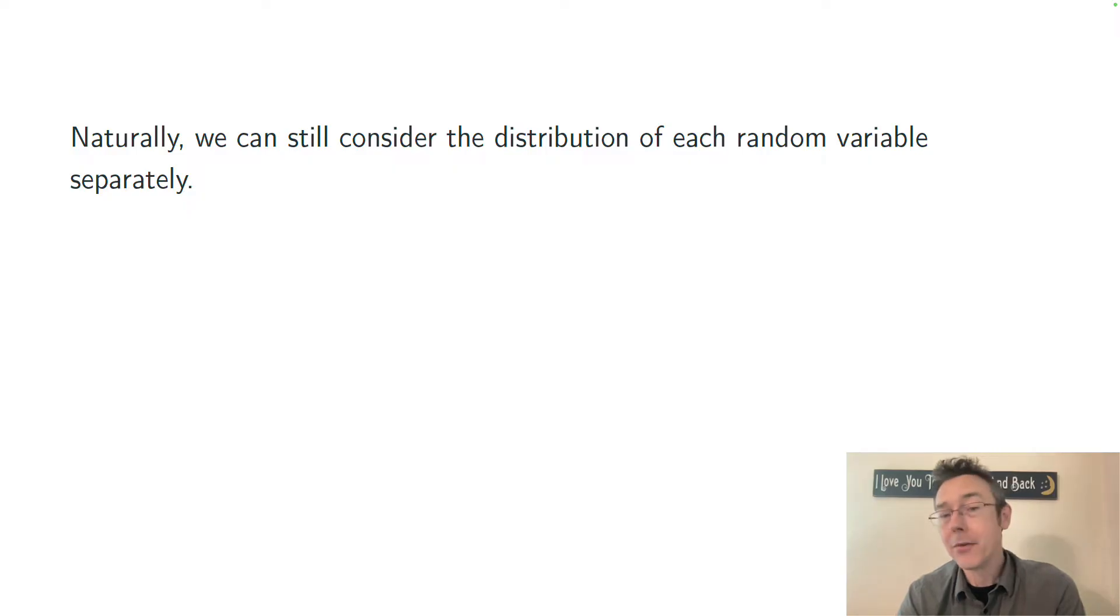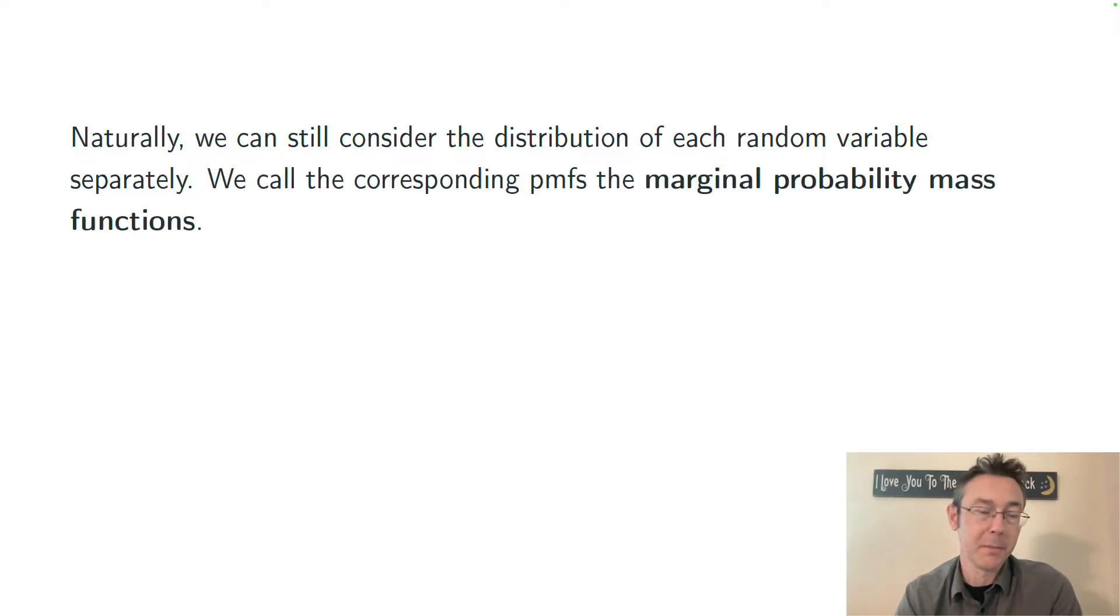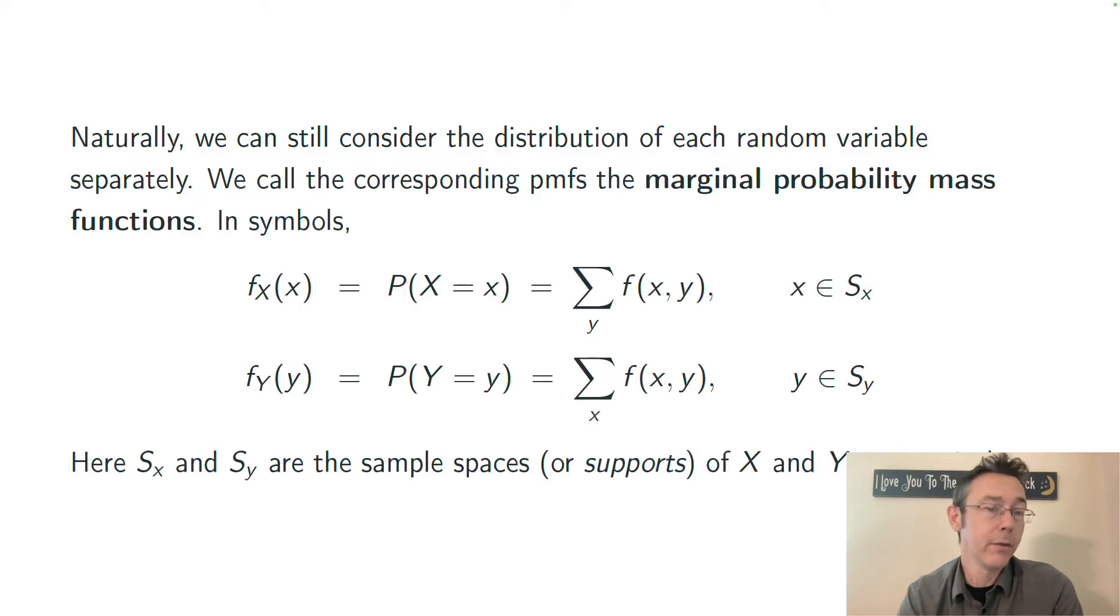Naturally, we can still consider either one of the random variables separately. This is called a marginal probability mass function. And you get a marginal probability mass function for one of the random variables by adding up over the other one. For instance, to get the marginal probability mass function for X, this is the top row here, we are taking each individual value of x, holding it fixed, and then summing over all the values of y. And this will just give you a simple function of that value of x that you're talking about.